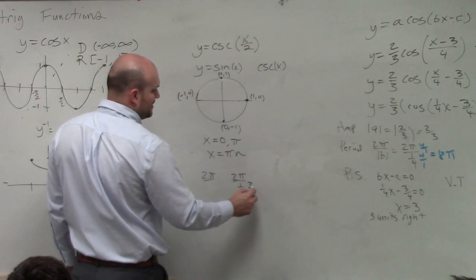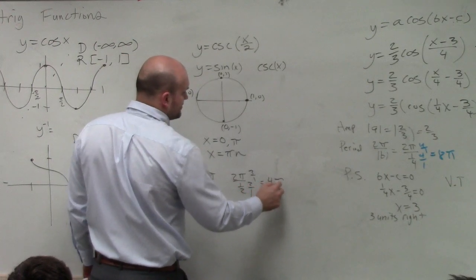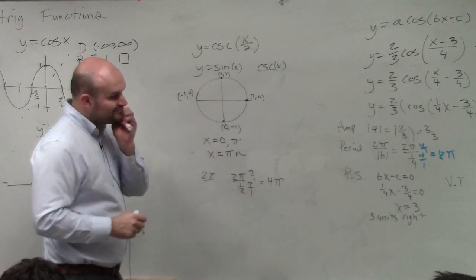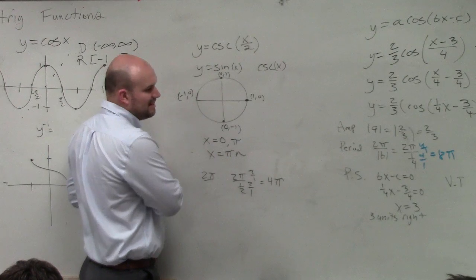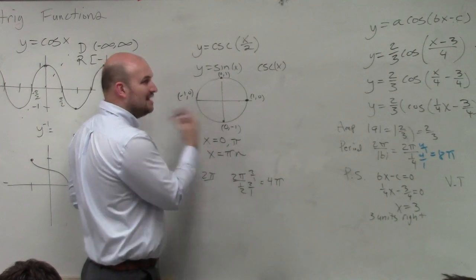So therefore, I multiply by 2 over 1, 2 over 1. So now I get 4 pi. So what has happened with my period has basically been doubled.